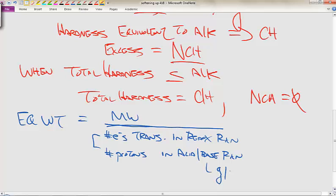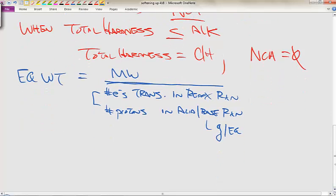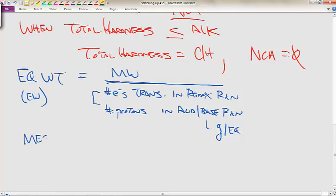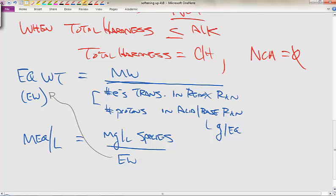This is typically grams per equivalence of the units at the bottom, and this is equivalent weight EW. Then we have milliequivalents per liter is equal to the milligrams per liter of the species all that divided by the equivalent weight, which we have right up here.